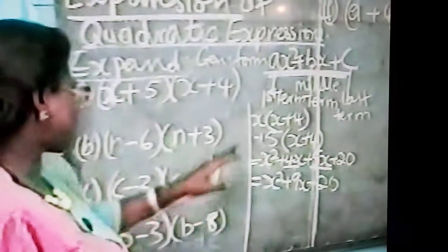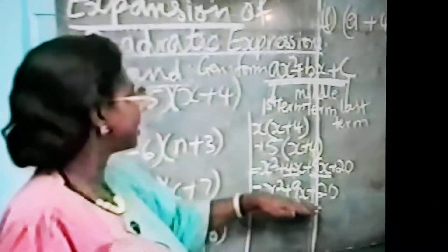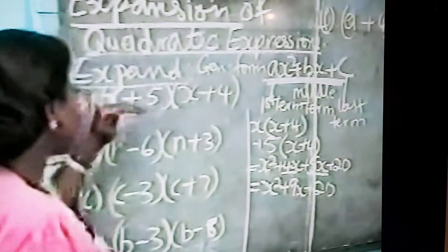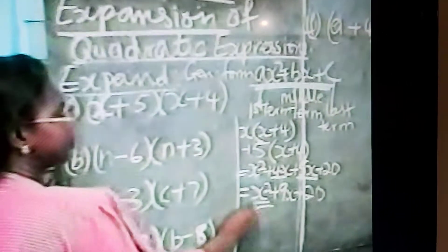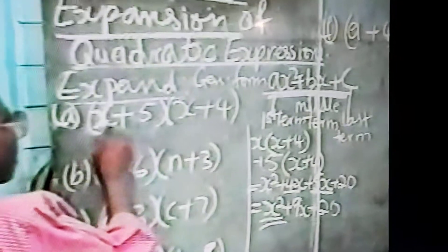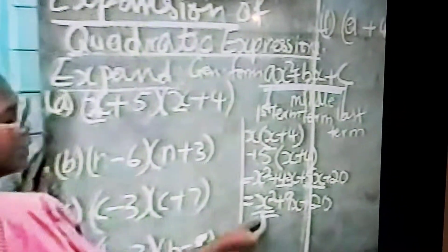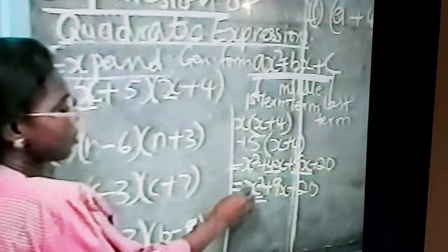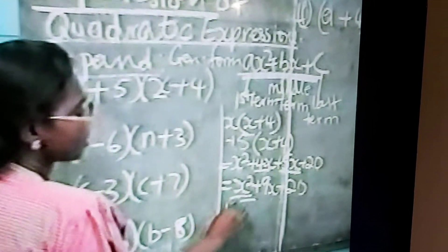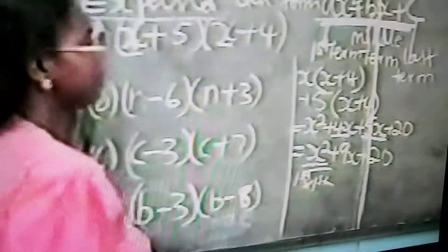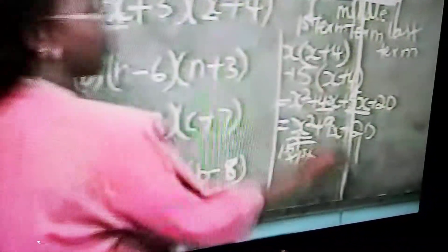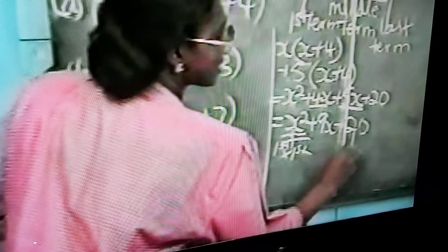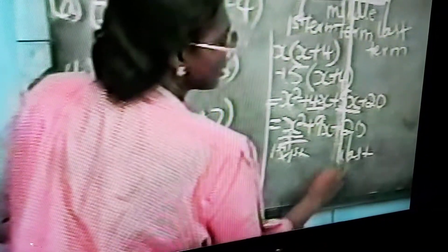Now, what I would like you to note is the answer and what you started with. The first term is the first thing. You agree with me. So first term is first times first. The last term, the last term is 5 times 4. That is, it is the last times the last.